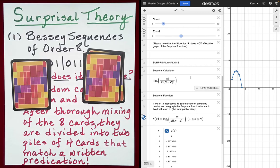Once again, what does that mean? Well, we'll go ahead and round it down. That's reasonable to do. So 6 bits. So what it means is all of the performances that I have shown on my channel that deal with Bessey sequences of order 8, each of those have a surprisal value of 6 bits.